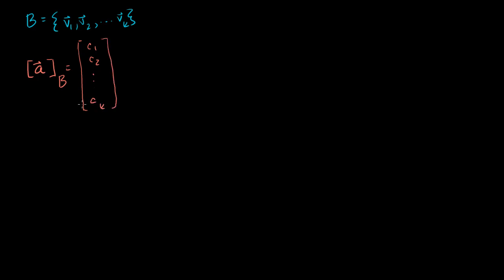By our definition of coordinates with respect to a basis, this literally means that I can represent my vector a as a linear combination of these guys, where these coordinates are the weights. So a would be equal to c1 times v1 plus c2 times v2, plus all the way to ck times vk.